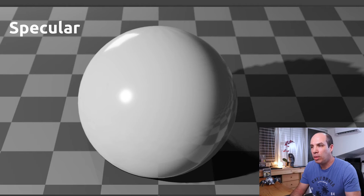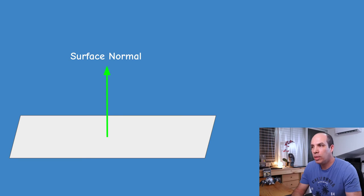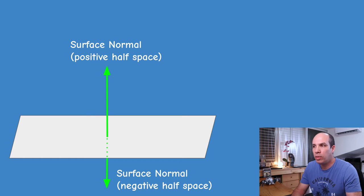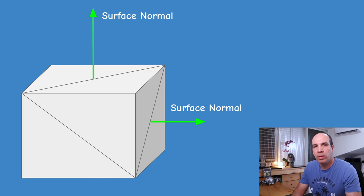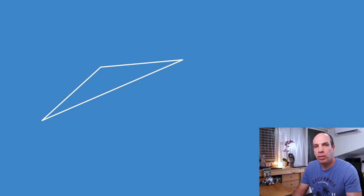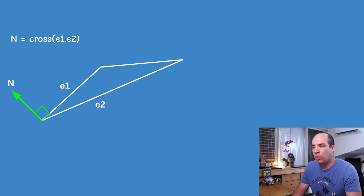Shininess belongs to specular lighting, which we'll cover in a future video. A surface normal is simply a vector perpendicular to the surface — it has a 90-degree angle with any vector that lies on the surface. A surface has two sides, so there are two normal vectors; we use the one coming out of the visible side of the triangle. In 3D rendering, the core building block is a triangle, so calculating the surface normal is a matter of computing the cross product of two edges, since the result is perpendicular to both input vectors.